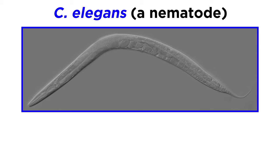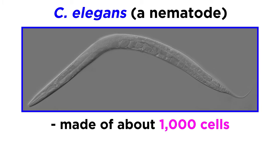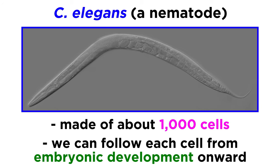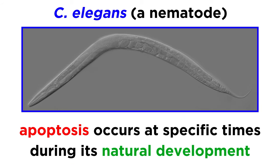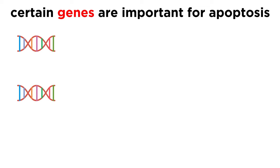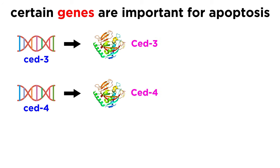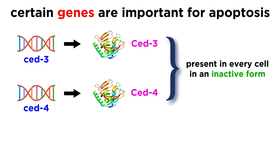This is a nematode named C. elegans. It's basically a small worm, so small in fact that it's made of only about 1,000 cells. Because there are so few cells, researchers can more easily trace the ancestry of any given cell from embryonic development onwards, and it is the case that apoptosis occurs at specific times during the natural development of the organism. In this particular organism, there are two important genes which encode proteins that are essential for apoptosis. These genes are called CED3 and CED4, which stand for cell death. The proteins they code for have corresponding names, CED3 and CED4. These proteins are present in all the cells, but in an inactive form.